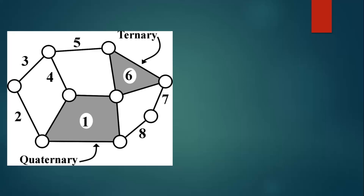So quaternary means the link has four nodes, ternary link has three nodes, and binary has two nodes. First, take link one - link one which has four nodes: one, two, three, and four. So we have only one quaternary link.